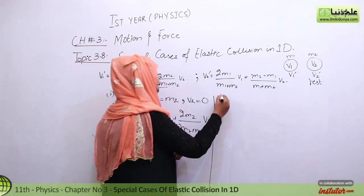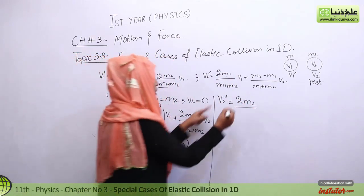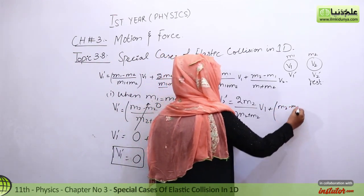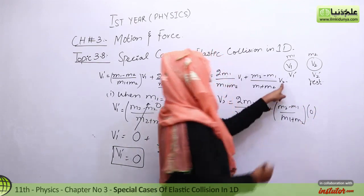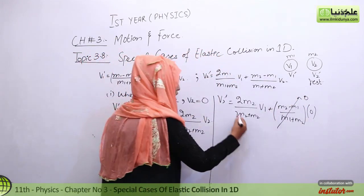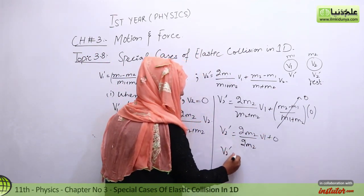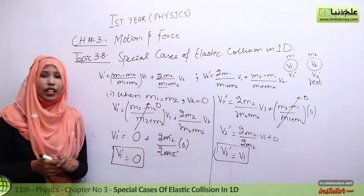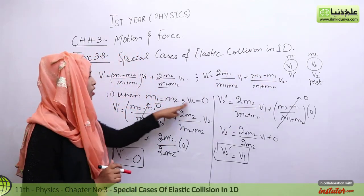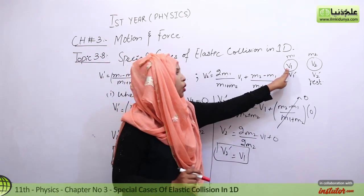Now let's solve for v2'. We get 2m2 over (m2 plus m2) into v1, which is 2m2 over 2m2 times v1, plus zero since v2 equals zero. So v2' equals v1. In summary for Case 2: when two equal masses collide with the second one at rest, v1' equals zero and v2' equals v1 — the first body stops and transfers all its velocity to the second.